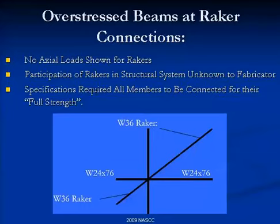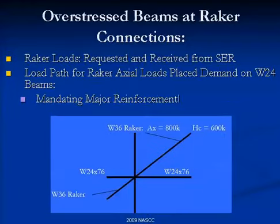If it's fully loaded in flexure, there isn't much strength left for axial. If it's fully loaded in axial, you probably can't put any precast seats on it. So there's a problem with the spec. The engineer requested and received loads from the engineer of record — and it turns out this raker had an 800 kip axial load, quite by surprise. The fabricator hadn't recently done a stadium and didn't realize the rakers might participate in the lateral load resisting system.